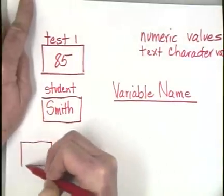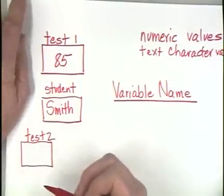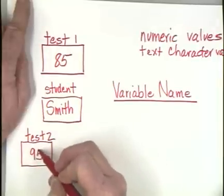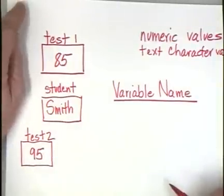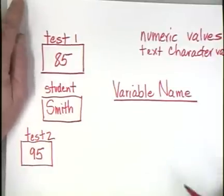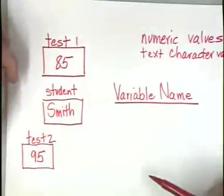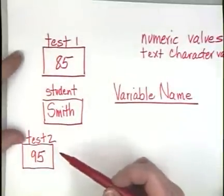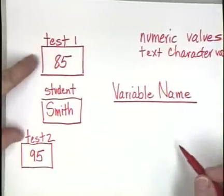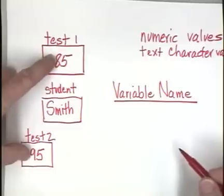Or student last name to label our container in memory so that we can refer to it. Some other examples, let's put another box here and say we're going to label this box or have the computer labeled for us a box called test two. And we're going to put our score on our second test in that box right here, another numeric value stored in a location in memory. So now we have the power to do something with the computer because we can go to test one and get the score, and we can go to test two and get the score, and tell the computer to use the ALU, the arithmetic logic unit, to add those two numbers together and divide by two to get an average and get a result.